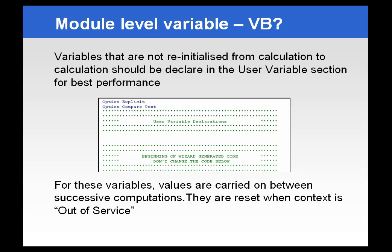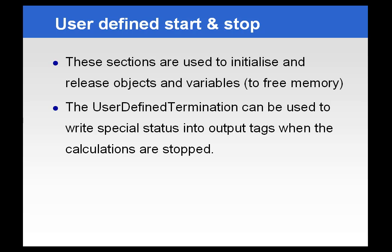There are two areas in the ACE wizard code that aren't used as often as others. The first is the user variable declaration section. If you have variables that you do not want reinitialized from calculation to calculation, you can declare them in this area, and these values will be carried on between successive calculations. They are only reset when the context is taken out of service. You also have user-defined termination and initialization sections. These are used for various functions — sometimes to release objects and variables, and sometimes to write special instructions when the calculation is initialized or terminated. We'll see an example of that in a moment.